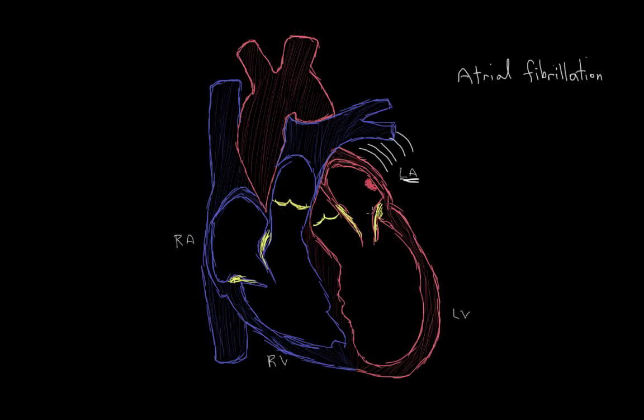And these clots, they can break off, travel into the left ventricle, and then out of the left ventricle, where they can head up to the brain. And they can get lodged in blood vessels in the brain, and therefore they cut off blood supply to parts of the brain, and cause an ischemic stroke, atrial fibrillation.